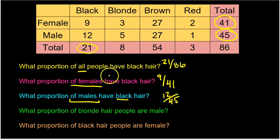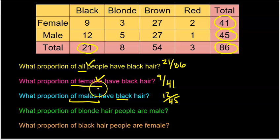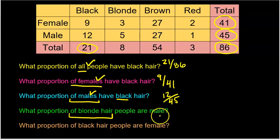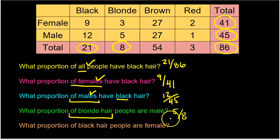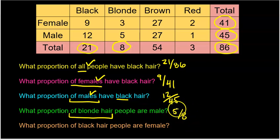For the first example the condition was all people — not really a condition since that's all 86. Here the condition was females, so only the 41 females. For the next example, what proportion of blonde-haired people are male? The condition is blonde hair, so I'm only looking at the 8 people with blonde hair. Of those 8, 5 are male — so 5 out of 8.